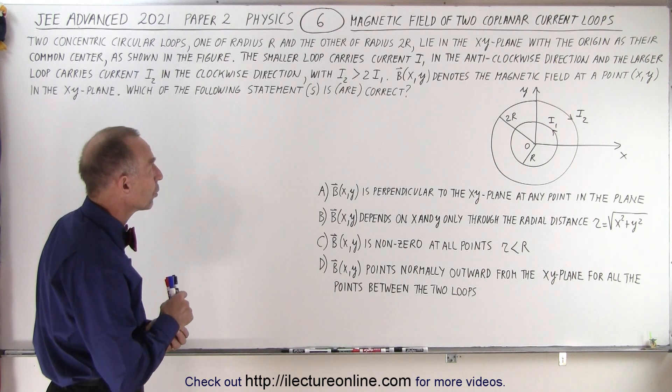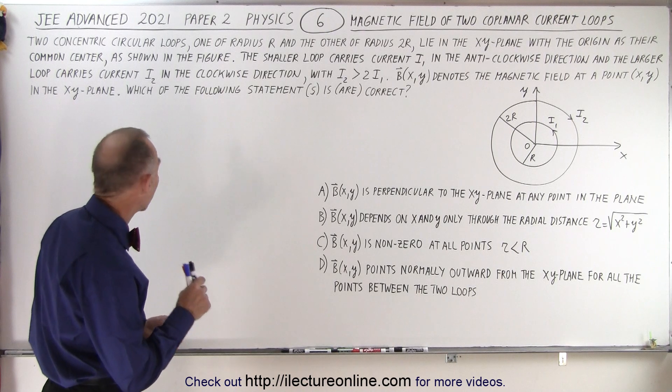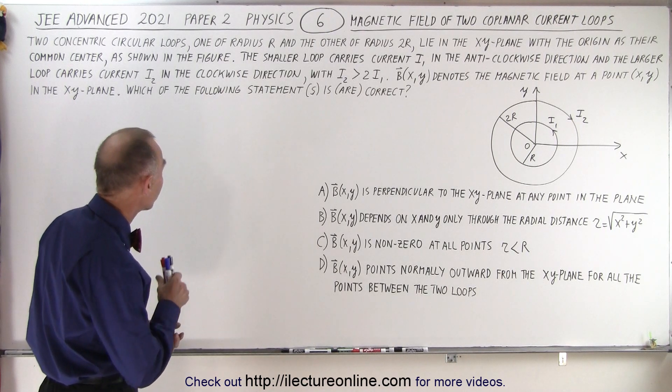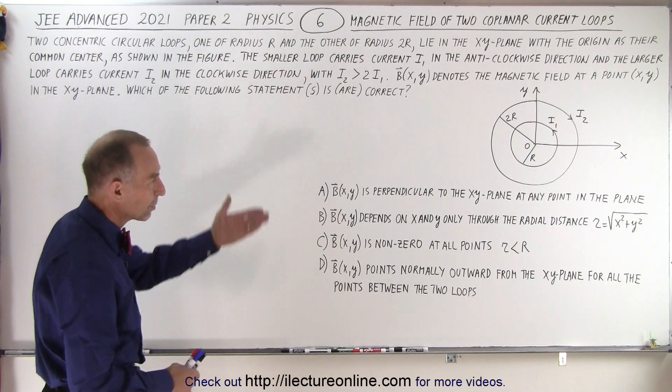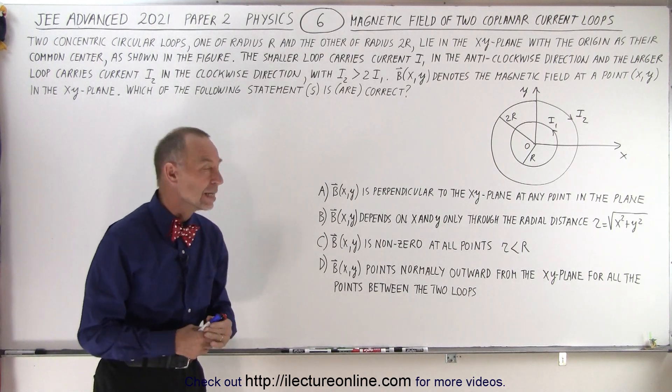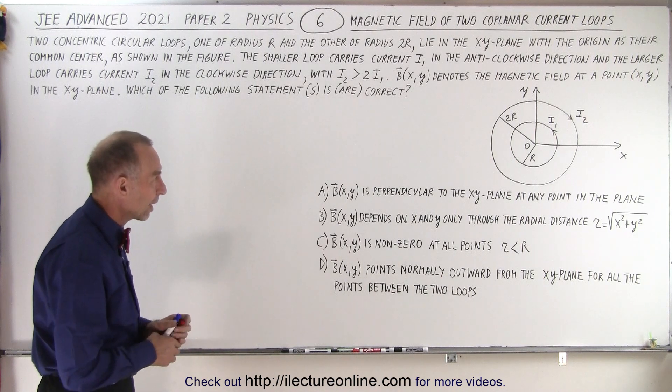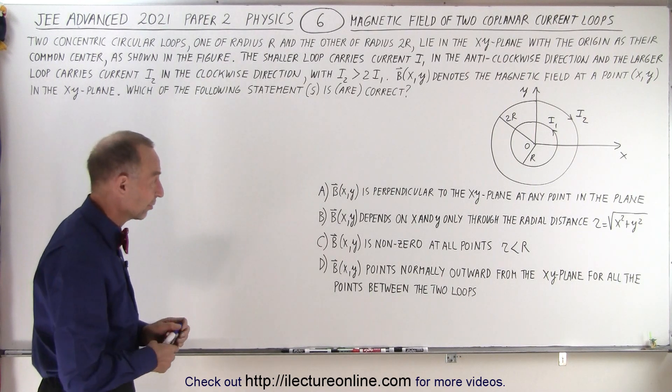The B field is denoted as the magnetic field at a point xy in the xy plane. Which of the following statements are correct and here are the four statements and there is the drawing, the diagram that they so kindly gave to us.